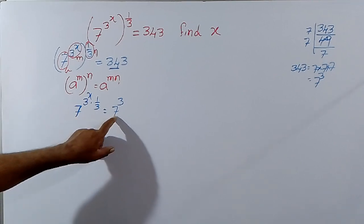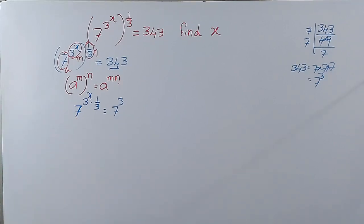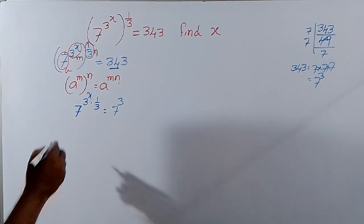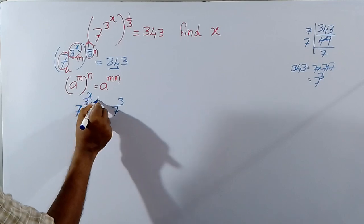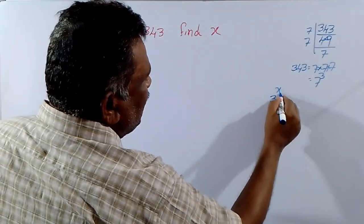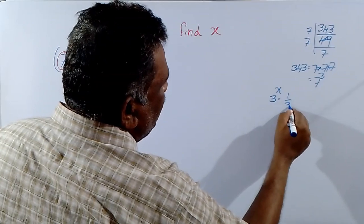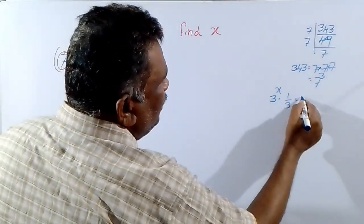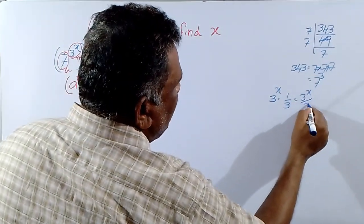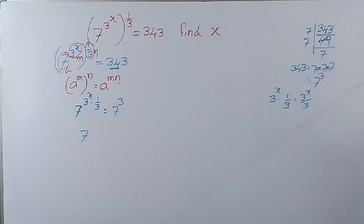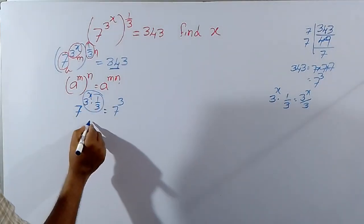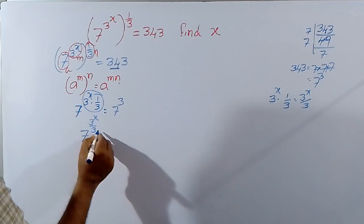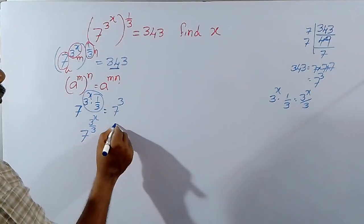Now here bases are equal. Then exponents are equal. So you can simplify. This is 7 power 3 power x into 1 by 3. 3 power x into 1 by 3 can be written as 3 power x by 3, equal to 7 cube.